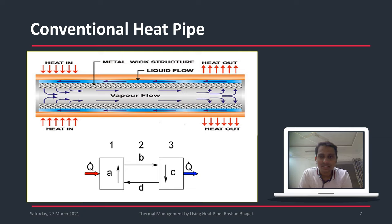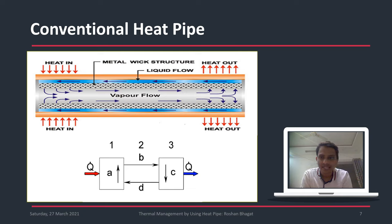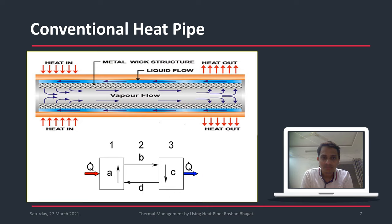In a conventional heat pipe, there is an evaporator section and a condenser section. These are separated by an adiabatic section. In the evaporator section, heat is absorbed; in the condenser section, heat is rejected. No heat is absorbed or rejected in the adiabatic section. Because of gravity, the liquid formed after condensation returns to the evaporator section, and this process continues in a cycle.